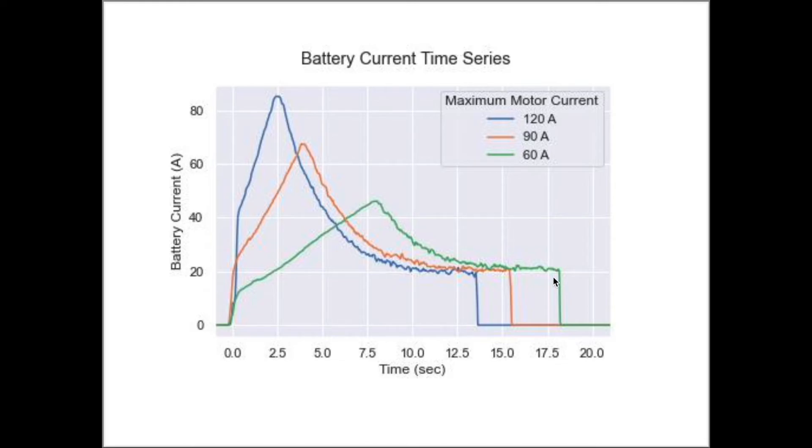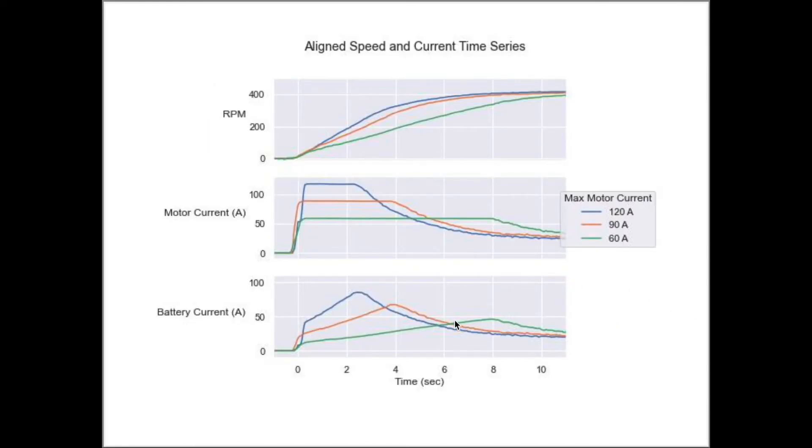Some patterns become more clear when we plot the graphs with a common x-axis. We see that the battery current peaks line up with the times when the motor current starts to fall.